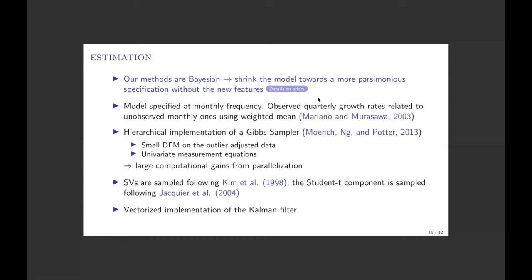We specify the model at the monthly frequency and handle mixed frequency using the Mariano-Urazawa trick. A key technical innovation is an efficient implementation of a Gibbs sampler in which all univariate components are broken down and parallelized, since they are independent from each other. If you have a computer with multiple cores, you can do them separately, then bring them back into the multivariate system, which speeds things considerably. We also use a vectorized implementation of the Kalman filter — Joshua Chan's precision filter — modified to allow for missing observations.